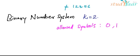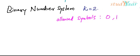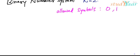These allowed symbols are 0 and 1. Only these two symbols are allowed to form a number. This is the binary number system.